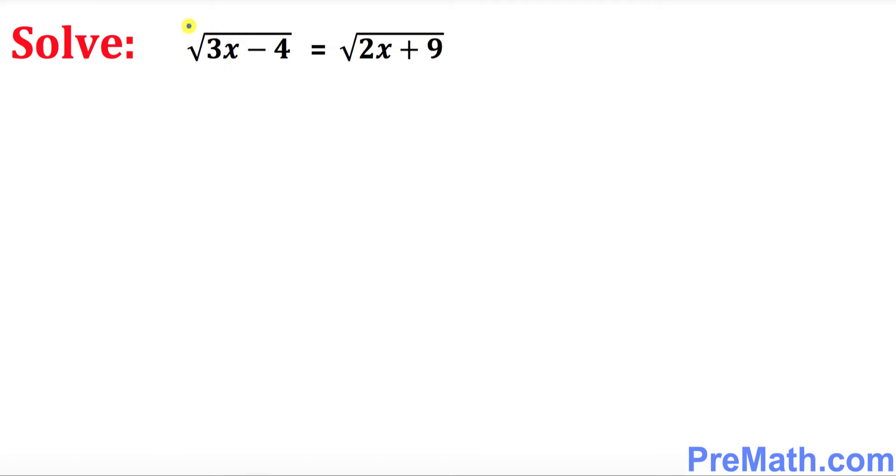So we want to get rid of these radicals, the square roots. In order to do that we want to square both sides. Go ahead and square both sides. What is going to happen?